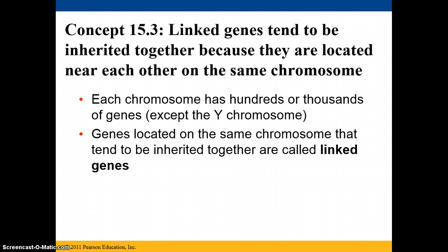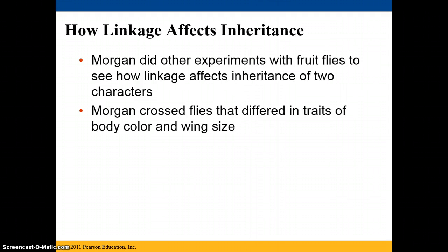Genes that are linked tend to be inherited together because they are located near each other on the same chromosome. Each chromosome is going to have hundreds or possibly thousands of genes, except for the Y chromosome. The more closely two genes are located on a chromosome, the more likely it is that they will be inherited together. Morgan figured this out again using fruit flies to see how linkage is going to affect the inheritance of two characters.